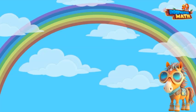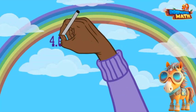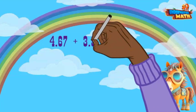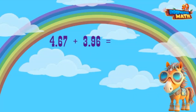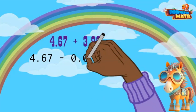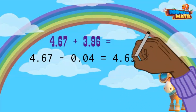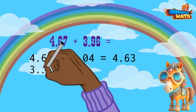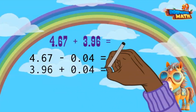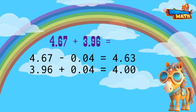Let's get started with the take and give strategy to make adding numbers easier. We have four and sixty-seven hundredths plus three and ninety-six hundredths. Three and ninety-six hundredths is close to the whole number four. If we take away four hundredths from four and sixty-seven hundredths, we get four and sixty-three hundredths. Now let's add the four hundredths to three and ninety-six hundredths, which gives us four. Now the decimals are easier — more friendly — to add.